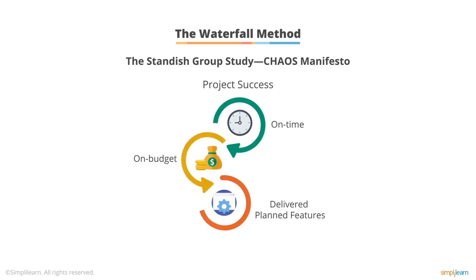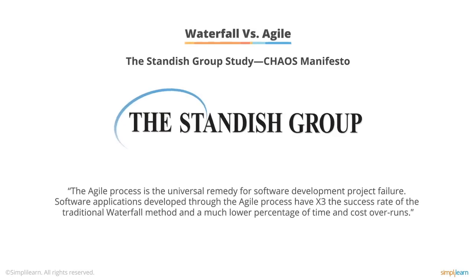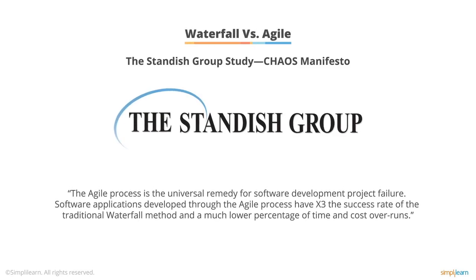The study summarized as follows: the Agile process is the universal remedy for software development project failure. Software applications developed through the Agile process have three times the success rate of the traditional waterfall method and a much lower percentage of time and cost overruns.